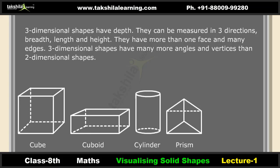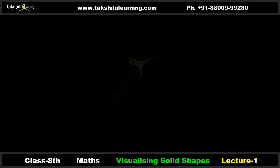Examples of three-dimensional shapes include cube, cuboid, cylinder, prism, pyramid, etc. Two-dimensional shapes and three-dimensional shapes are the two main categories we will be studying.